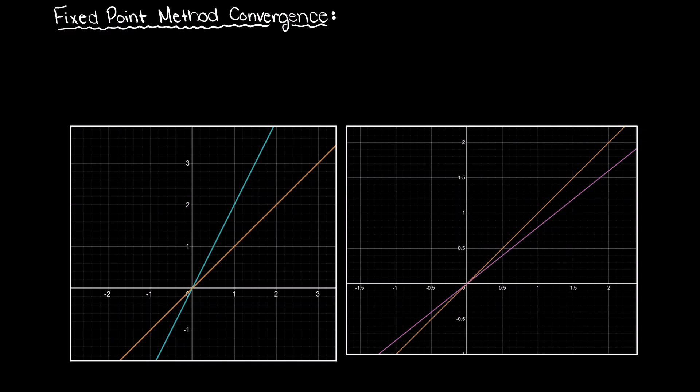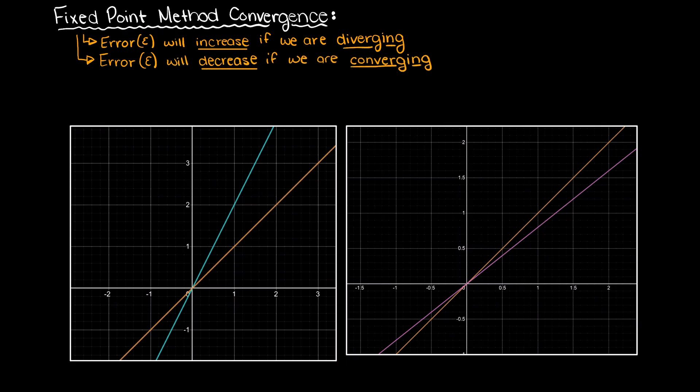So how do we know if our fixed point algorithm is going to converge or diverge from our fixed point? Meaning, under which situations will our error be increasing, which is diverging or moving away from our fixed point, or converging, closing in on our point of interest.